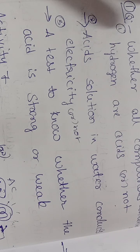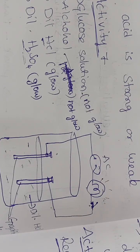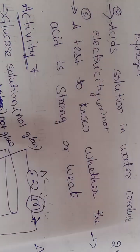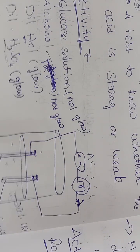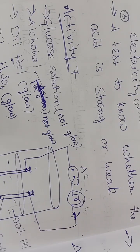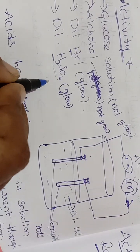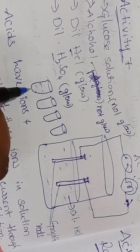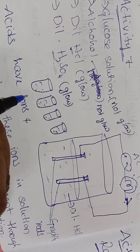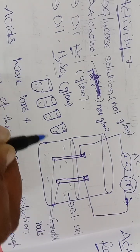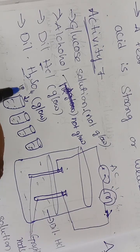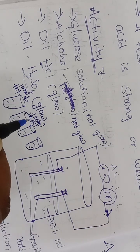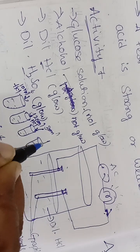The second question: does an acid solution in water conduct electricity? For this we have a lab activity to test whether a given acid is strong or weak. I am taking the same graphite rod and beaker, but now using four test tubes. I add 100 ml of water to all the beakers, then add 10 ml of HCl to the first, 20 ml HCl to the second, 30 ml to the third, and 40 ml to the fourth.